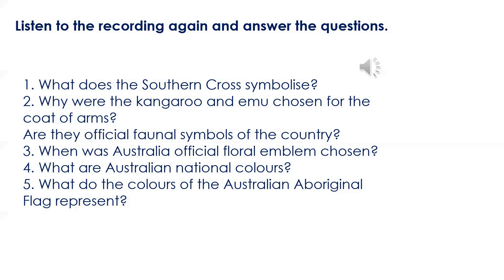What about a floral symbol? The golden wattle, also found on the coat of arms, was proclaimed the official national floral emblem in August 1988. Above, there is the Commonwealth Star. The national colours are green and gold. There is one more official flag in Australia — the Australian Aboriginal flag — which represents Indigenous Australians and is one of the official flags of the country.